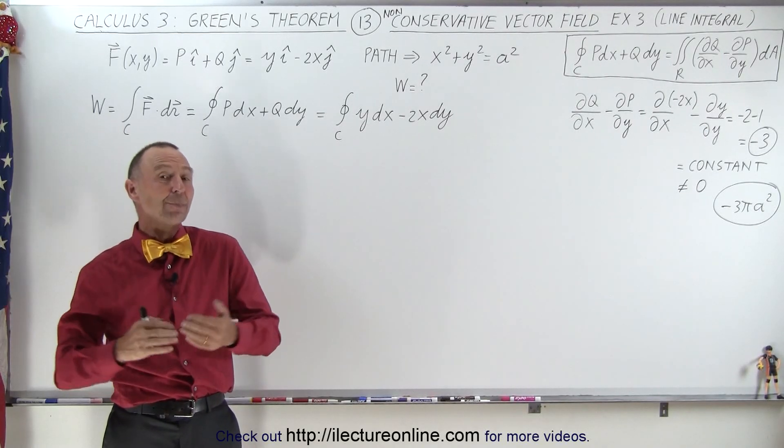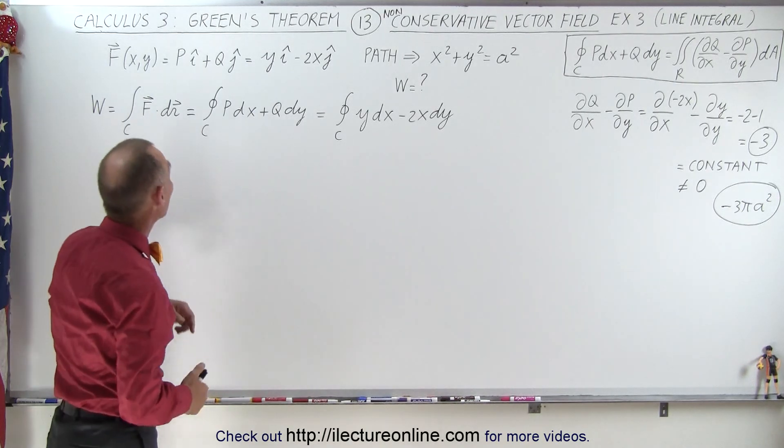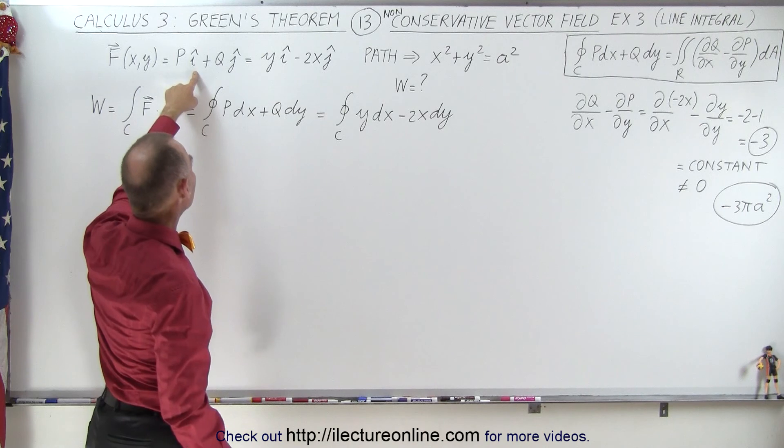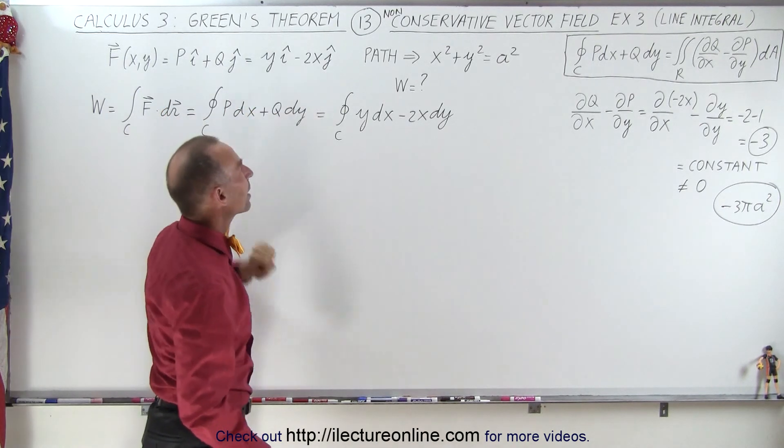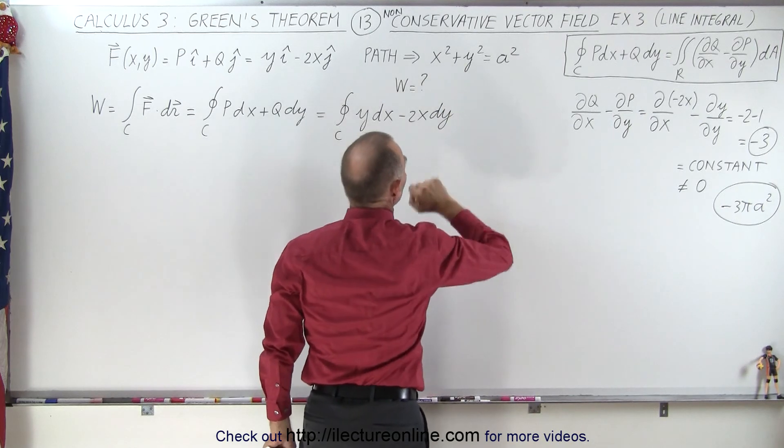Welcome to our lecture online. In the previous video we used Green's Theorem to solve this particular problem. We had to find the work done by moving through a vector field defined by this equation right here on the circular path of x squared plus y squared equals a squared.